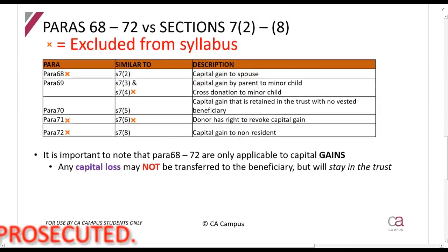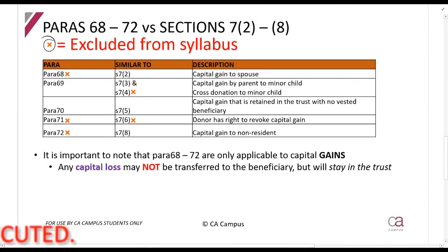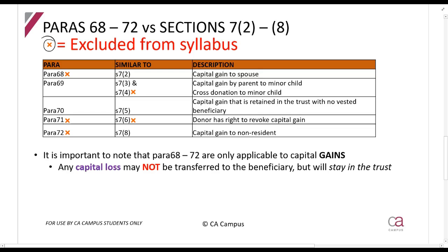I've made little crosses here where sections are excluded from the syllabus, so some of these sections are excluded — just be careful. Paragraph 68 is very similar to section 7.2 when there's a disposal to a spouse, but you won't be required to know paragraph 68 as it's excluded from the syllabus.